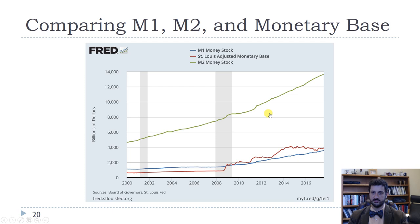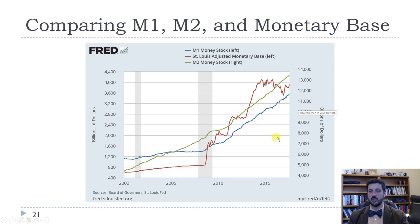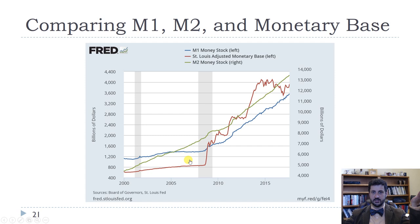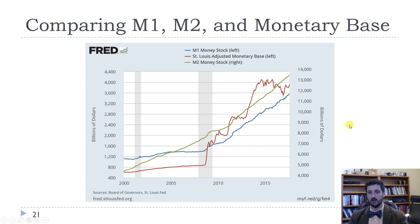We can see the changes better if we put M2 on the right axis with a different scale, and M1 and the monetary base on the left-hand axis. There is a big jump in the monetary base because the Federal Reserve started buying a whole bunch of assets from banks, paying them with reserves. A lot of people worried that would increase inflation. It did increase M1 fairly substantially, though not quite as much as the monetary base increased, but it didn't increase M2 by as much. A lot of that money just sat in bank accounts and did not increase inflation — we'll talk about that more in a later chapter.